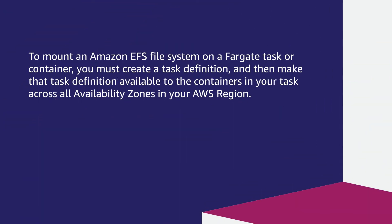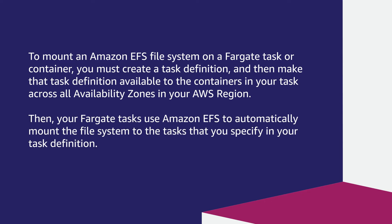To mount an Amazon EFS file system on a Fargate task or container, you must create a task definition and then make that task definition available to the containers in your task across all availability zones in your AWS region. Then your Fargate tasks use Amazon EFS to automatically mount the file system to the tasks that you specify in your task definition.